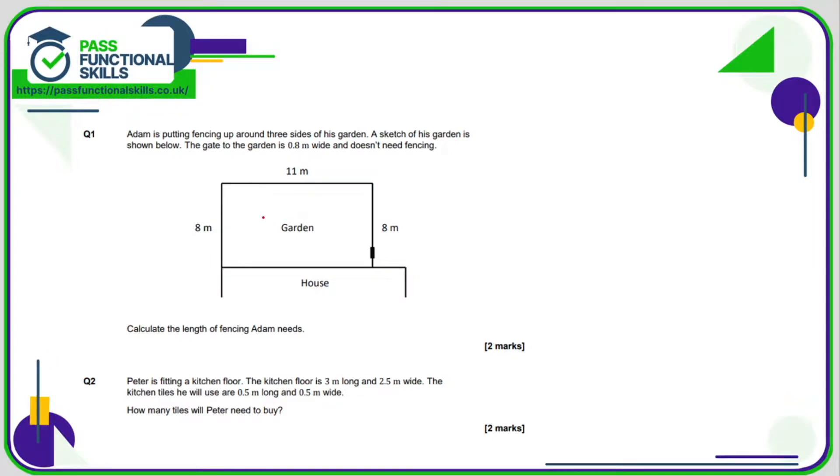Question number one: Adam's putting a fence up around three sides of his garden. A sketch of the garden is shown below, and the gate to the garden is 0.8 meters wide and does not need fencing. So the amount of fencing Adam needs is going to be 8 plus 11 plus 8, but minus the 0.8 for the gate.